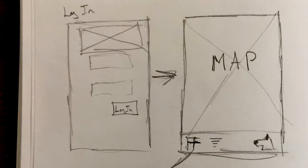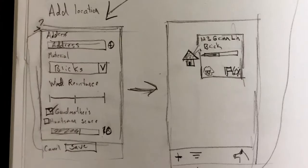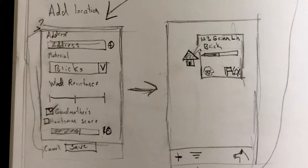And then since it's a mapping app, once the wolf has logged in, I've sketched out a map — just shorthand with a few tab navigation at the bottom. If you're a wolf mapping your neighborhood and want to add a location, I've drawn in bits of info like an address, what material the building is made of — bricks or straw or sticks — wind resistance, whether there's a grandmother on the premises, and a Huntsman score.